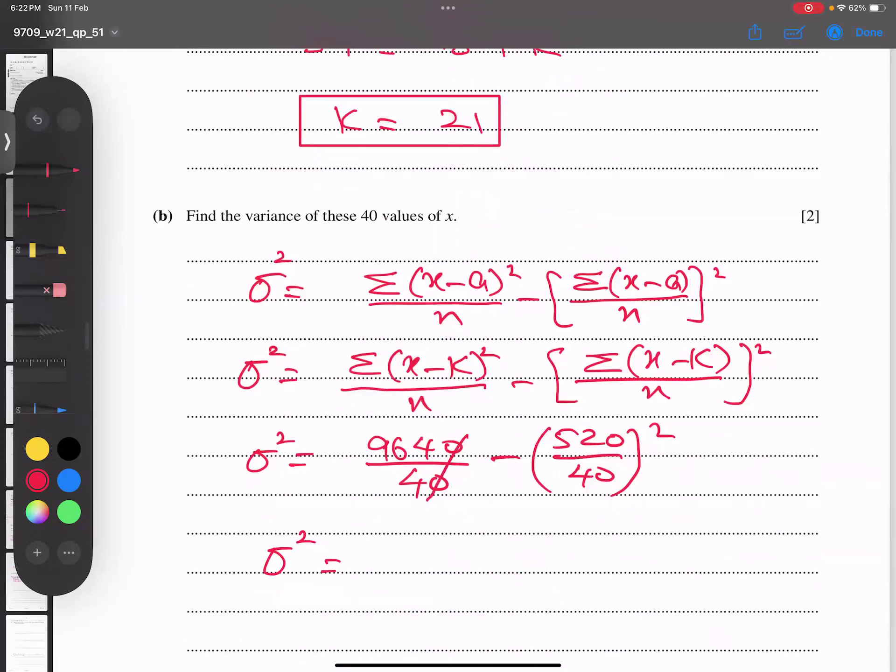Now just type in the calculator. Sigma squared: zeros cancel out. If you type this in the calculator, 964 by 4 minus this, the answer is 72. So sigma squared equals 72 is my answer. I believe you got the idea.